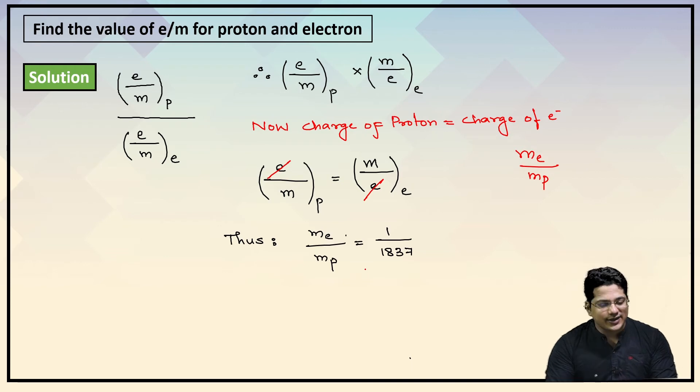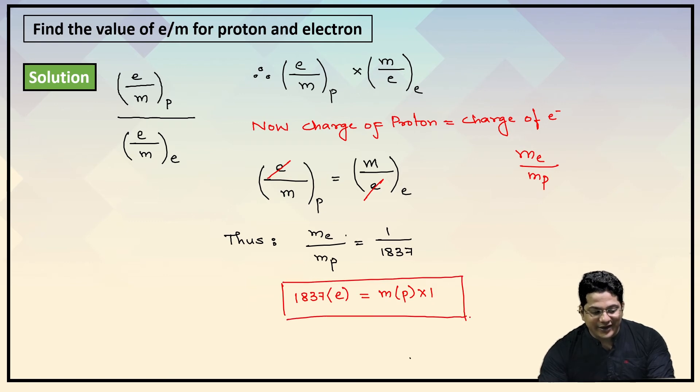How do you remember this? Do a very simple work. If we cross multiply this, will I get 1837 × mass of electron? 1837 × mass of electron equals mass of proton × 1. Check it out. And yes, this is what we have learned in the note. So if you get this right, whatever ratio you have written is right. So there's no confusion whether it is 1837 upon 1 or 1 upon 1837. Clear, right? Okay.